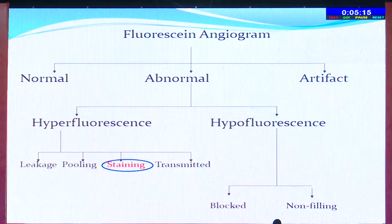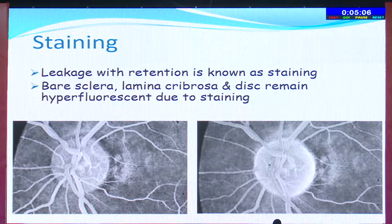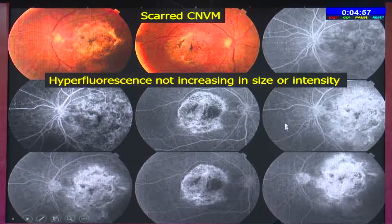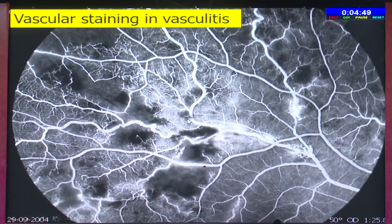Staining hyperfluorescence is leakage with retention. It can be demonstrated normally by the bare sclera and lamina cribrosa. A scarred CNVM is another example of staining, where the edges of the lesion show highlighted hyperfluorescence. In vasculitis, you can also get staining of the vessel walls.